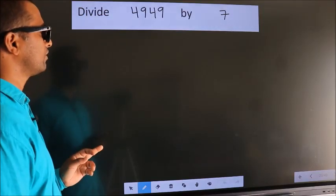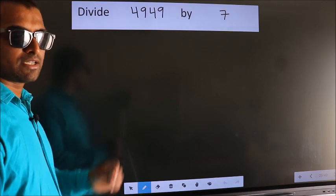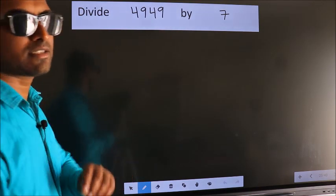Divide 4949 by 7. To do this division, we should frame it in this way.